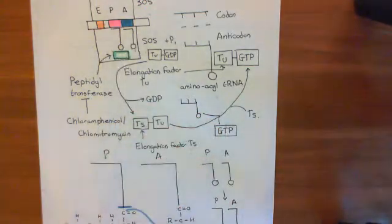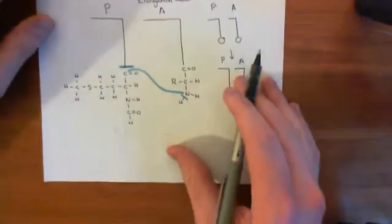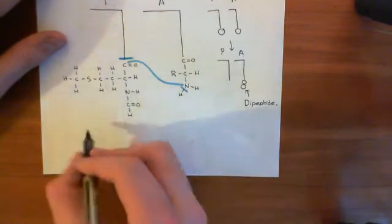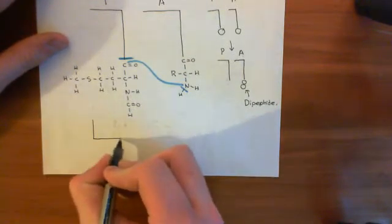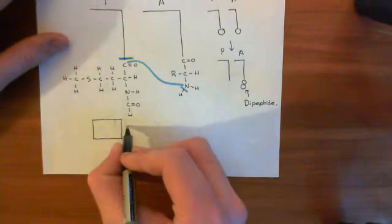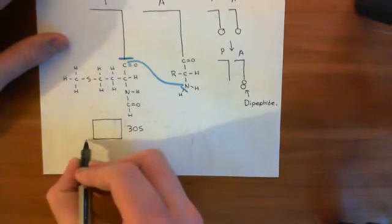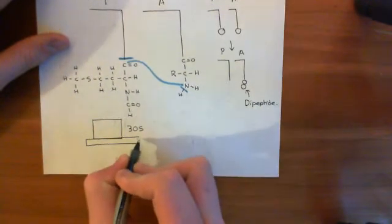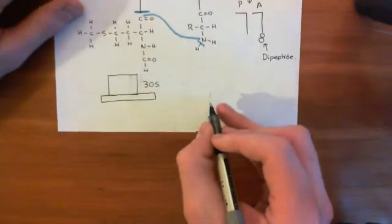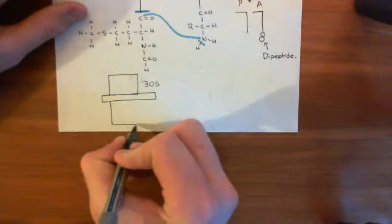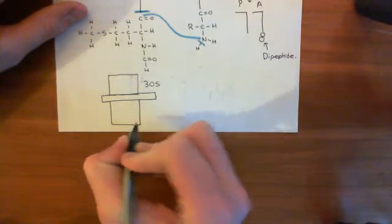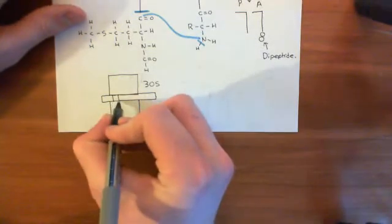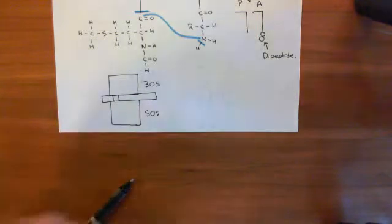So what we now want to see is how translation continues after that. Let me draw out what stage we're at. We have our 30S ribosomal subunit here. We then have our mRNA sitting in here. We have a 50S ribosomal subunit below here. And then we have the Shine-Dalgarno sequence here.